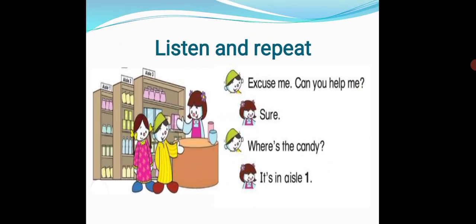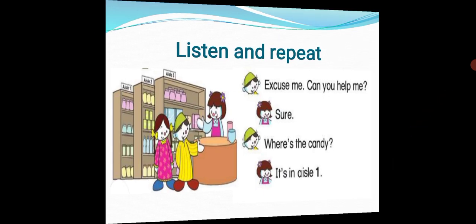Now listen and repeat this conversation from the first. Where are they talking? They are talking at the supermarket. Excuse me. Can you help me? Sure. Where is the candy? It's in aisle one. At the supermarket, he says excuse me, can you help me? She says sure. He asks where is the candy? It's in aisle one, in the first aisle.